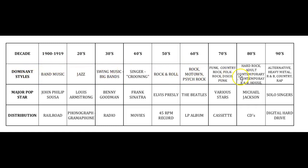The dominant style means the most popular style. Band music in this particular case refers to John Philip Sousa — the marching bands, the band music we talked about already. He's your major pop star of the era. Most of the time that's based on sales of records, but Sousa — there was nobody else. That was from 1900 to 1919, on both sides of World War I, which was 1914 to 1918.